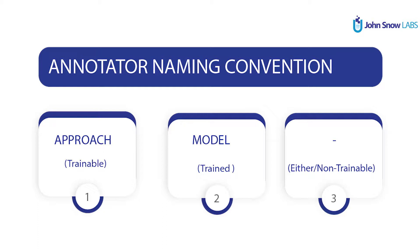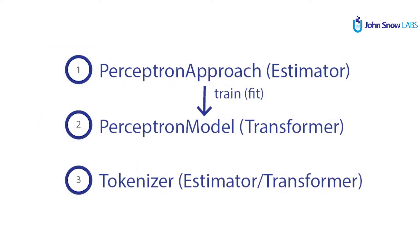Let's begin with the annotator naming convention. Annotators that have 'approach' in their name basically means that this annotator needs training, or it is for training. If the annotator has 'model' in its name, it means it's already trained. Sometimes annotators like the tokenizer or the normalizer don't say either approach or model — these are not machine learning trainable, they just need some preprocessing or preparation.